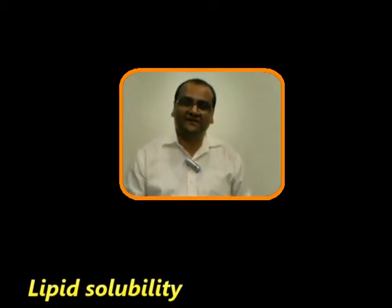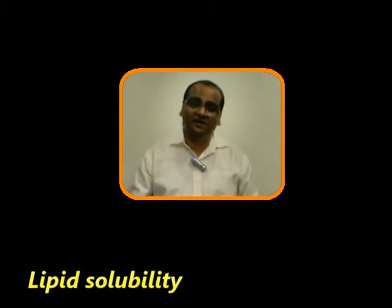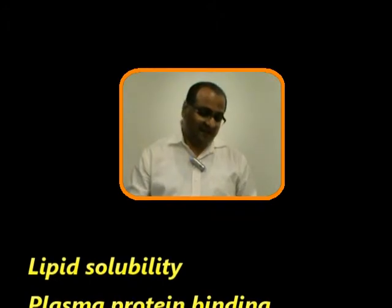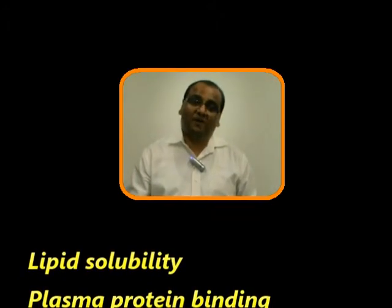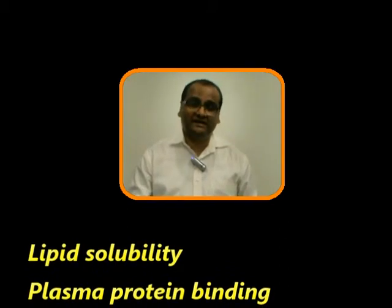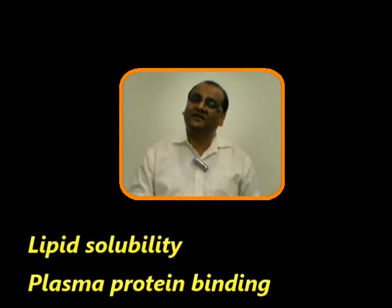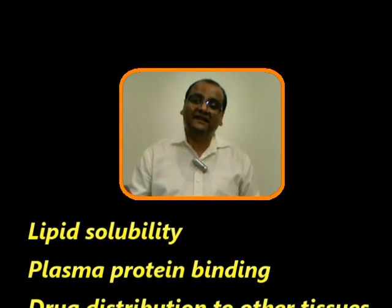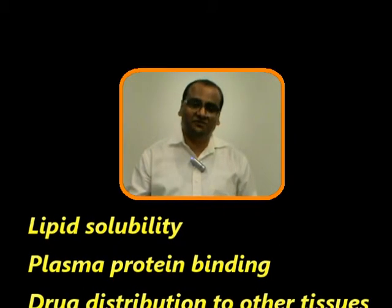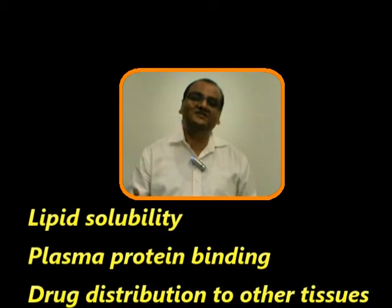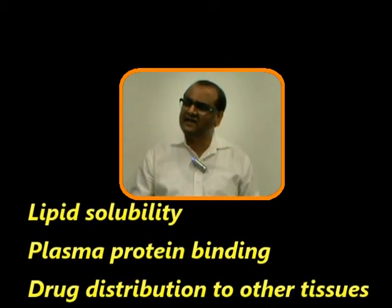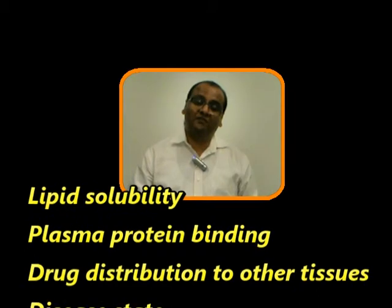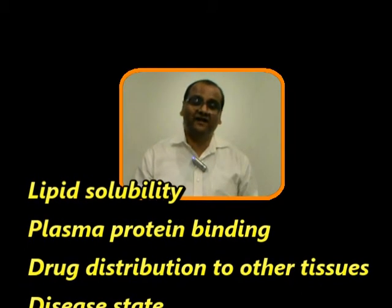So antibiotics like streptomycin and gentamicin are lipid insoluble, so they have a low volume of distribution. The next thing is about binding of drugs to plasma proteins. You all know that drugs are bound to plasma proteins whenever they are flowing through the intravascular compartment. More the binding, less is the volume of distribution. So drugs like oral anticoagulants like warfarin have very high protein binding capacity, like 95% plus.